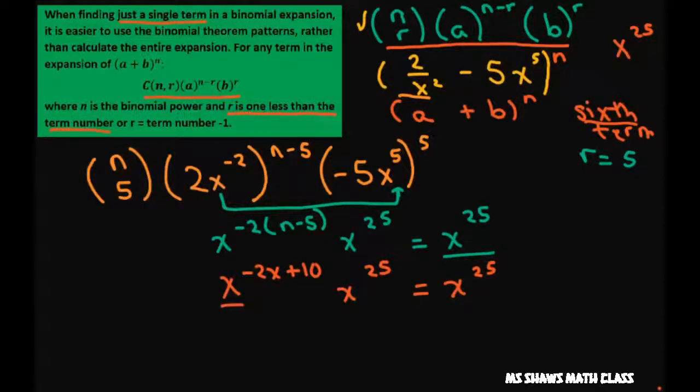And I'm going to combine this using my product property of exponents. So we have negative 2n plus 35 equals 25. Now that my bases are the same, I can just solve for n. And these should have been n's, so let me put n's there.